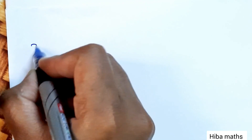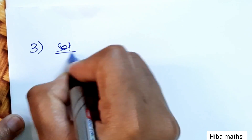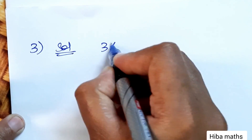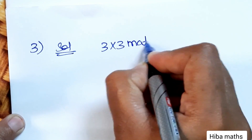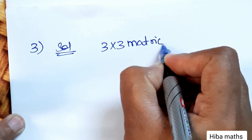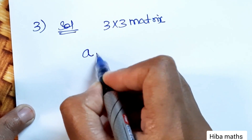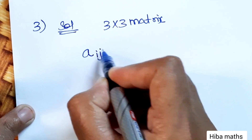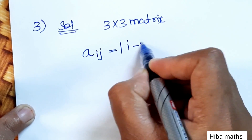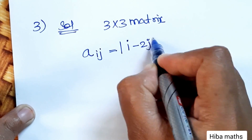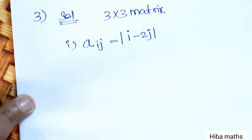Third question, solution: we have a 3x3 matrix. The element A[i,j] is defined by the function i minus 2j. This is the first subdivision. We have a sequence of subdivisions.